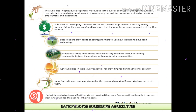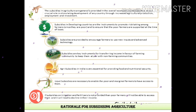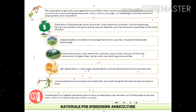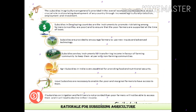The third point is that farmers can use technology through a technology subsidy, enabling them to adopt better farming practices.